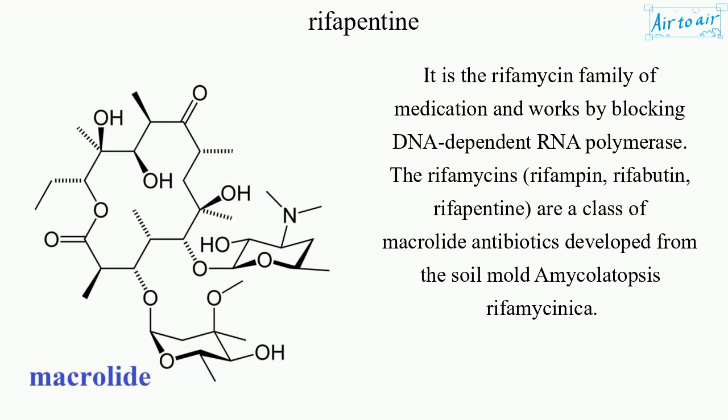It is in the rifamycin family of medications and works by blocking DNA-dependent RNA polymerase. The rifamycins — rifampin, rifabutin, rifapentine — are a class of macrolide antibiotics developed from the soil mold Amicolatopsis rifamycinica.